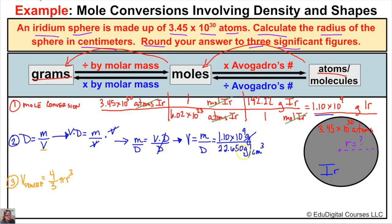Grams in the numerator and denominator cancel, leaving cubic centimeters as our unit of volume. We take 1.10 times 10 to the 9th and divide by 22.650, which is the density of iridium, and we end up with 4.86 times 10 to the 7th cubic centimeters.